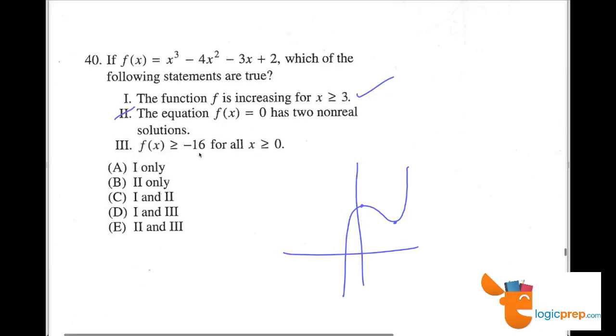Now, f of x is equal to negative 16 for when x is greater than zero. Well, when x does equal zero, you can see here this becomes zero, zero, and zero. This equation is two. And so we know that f of x is going to be greater than negative 16 for all values of x is greater than or equal to zero. So therefore, one and three both work. Answer choice D.